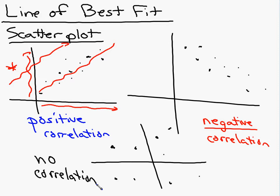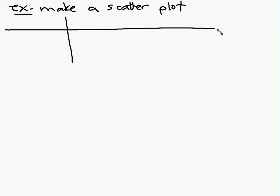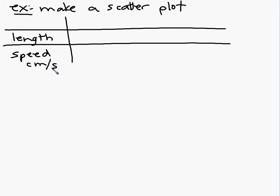So the first thing I want to do is make a scatter plot with kind of a more challenging set of numbers. Because if you can do one with the more challenging numbers, then the easier numbers will be a cinch. So what I'm going to give you is a table of values. These are going to be values that relate how long a fish is to how fast it swims.